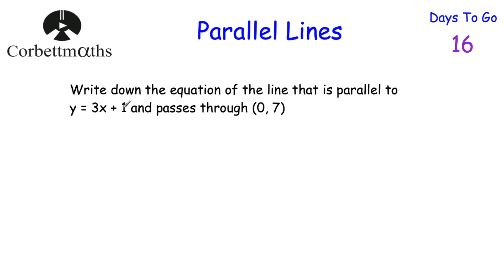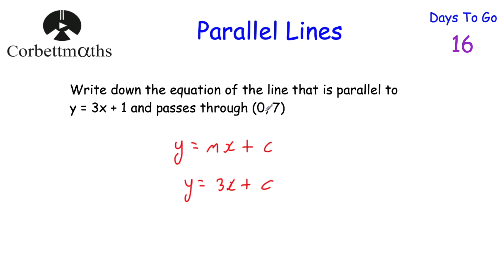Okay, let's have a look at our next question. The question says: write down the equation of a line that's parallel to y equals 3x plus 1 and passes through the point 0, 7. So we're looking for an equation in the form y equals mx plus c. We need to find its gradient and its y-intercept. It's parallel to this line, so it has to have the same gradient of 3. So it's going to be y equals 3x plus c. Now we need to find c, the y-intercept, and it passes through the point 0, 7. That point is actually on the y-axis — the y-intercept is 7.